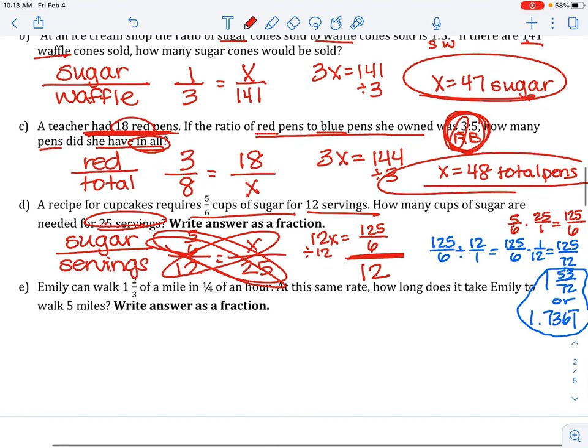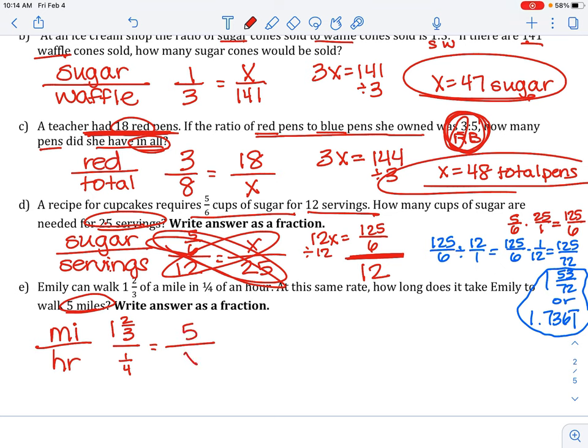E. Emily can walk 1 and 2 thirds of a mile in 1 fourth of an hour. So, we're talking about miles over hours. Set up your proportion. We've got 1 and 2 thirds miles in 1 fourth of an hour. How long does it take Emily to walk 5 miles? We said miles would be in the numerator, so put miles on top, x on bottom.